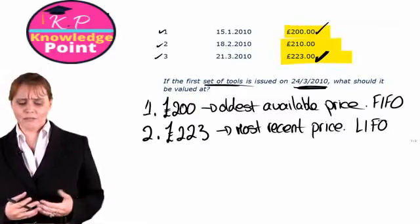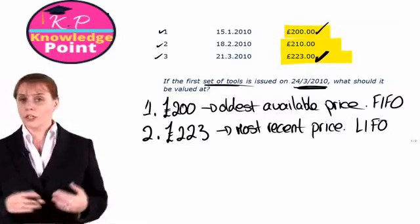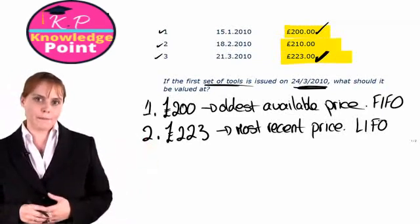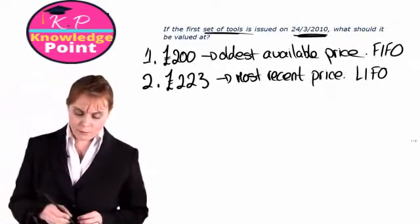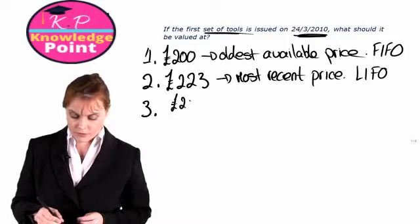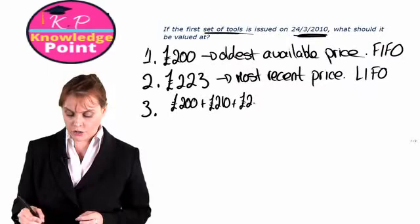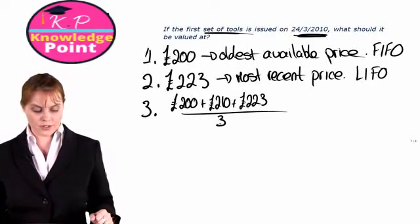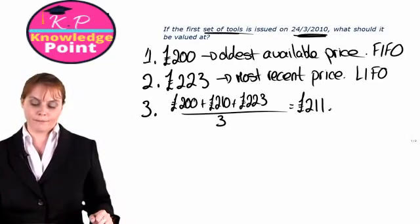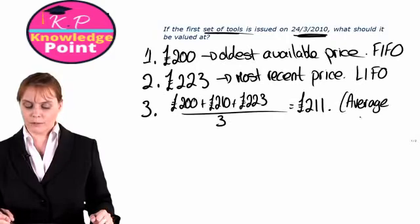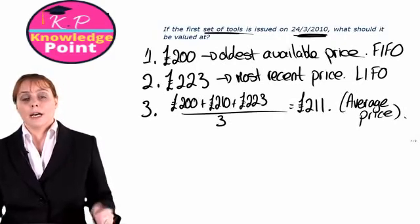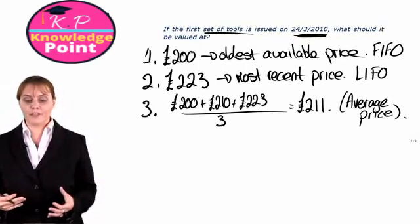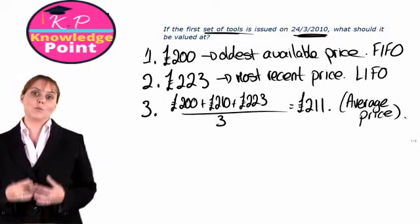Or you might think to yourself, if we paid a different purchase price each month, surely the fairest or most appropriate way to value the issue is to find an average of all three prices. Option three then would be to take an average. So we have 200 plus 210 plus 223, so the total cost of all our purchases divided by the number of units we purchased, and we get an average of 211. These effectively are the three different methods we can use to value our inventory: the FIFO method, the LIFO method, and our average, or what we will refer to as the weighted average method.